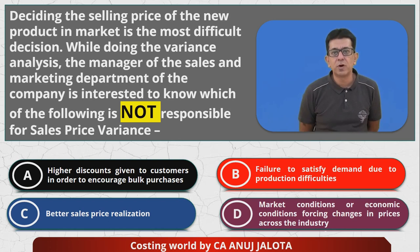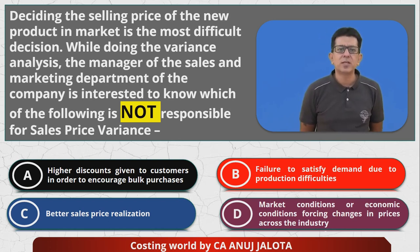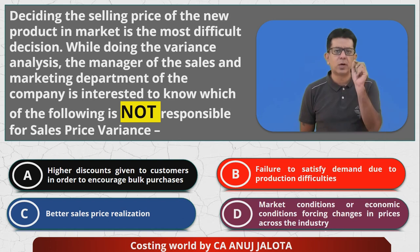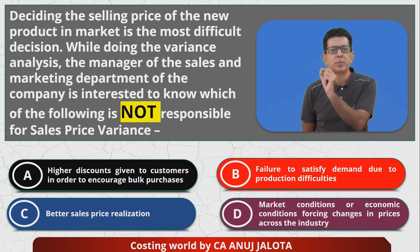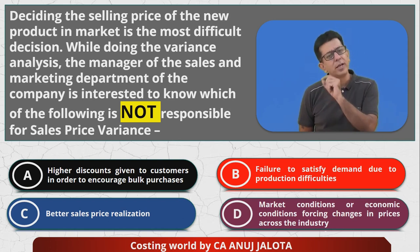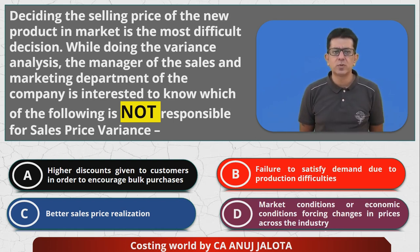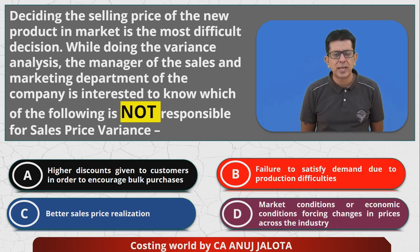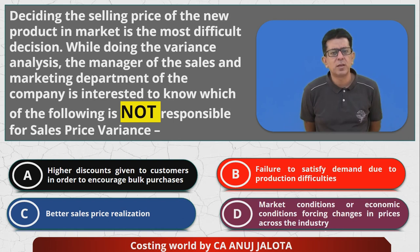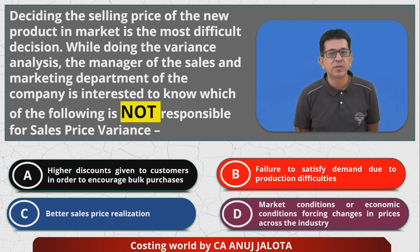Let's look at the four options. How do you compute selling price variance? Selling price variance is: (standard price minus actual price) multiplied by actual quantity sold. Option A — Higher discounts given to customers to encourage bulk purchases: if you give a discount, the actual selling price becomes lower, so selling price variance will get affected.